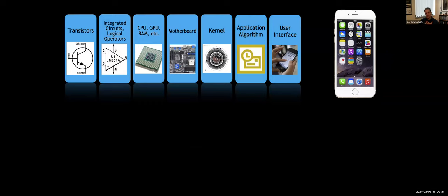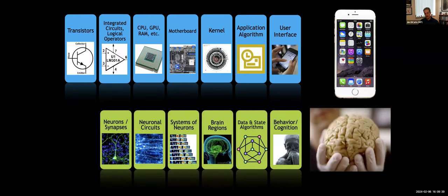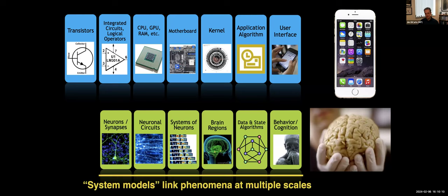I want you to accept that there's a mission to understand the brain in engineering terms and how it gives rise to our minds. But to do that, we're going to need something more — something that explains how all those transistors give rise to the app, or how all your neurons working together give rise to who you are. It also helps to think about a complex engineering device like a phone: it's based on transistors, but there's a stack of things built on top, levels of abstraction that ultimately give rise to the amazing user interface. By analogy, human cognition — the reason we study brains — underlies interesting behavior and intelligence.